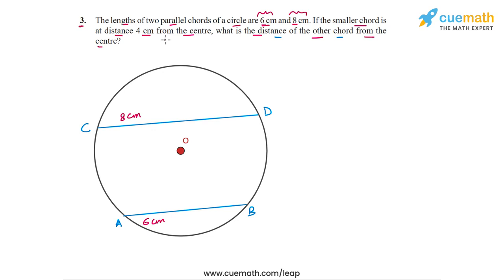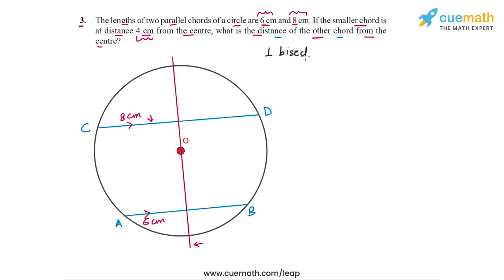We know that AB is at a distance of 4 cm from the center. We are going to draw the perpendicular bisector of AB. This perpendicular bisector will pass through O, the center, because the perpendicular bisector of any chord must pass through the center. And because CD is parallel to AB, this perpendicular bisector of AB must also be perpendicular to CD and must also bisect it — so it is also the perpendicular bisector of CD. There is a common perpendicular bisector. The distance of AB from O is 4 cm, so let this point of intersection be X, meaning OX is 4 cm.